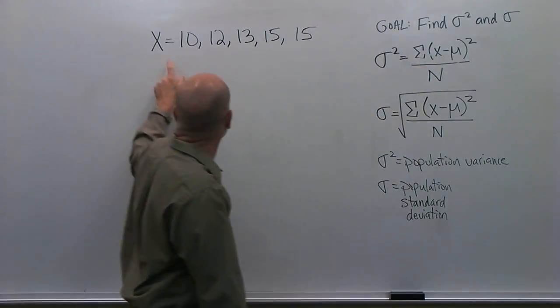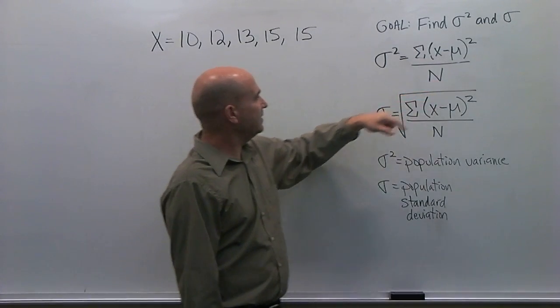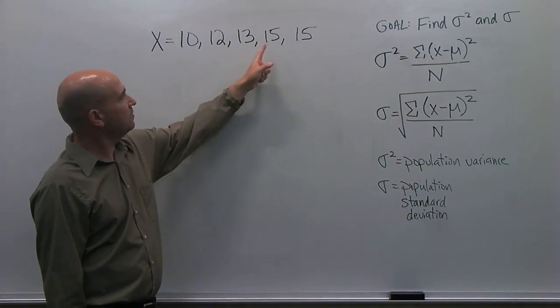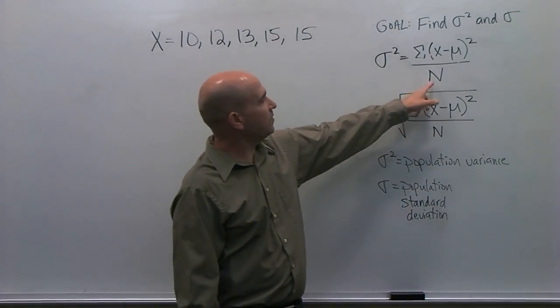Notice here we have an x, and that's our variable x here. We also have an n, and that's equal to the number of values we have here, which is 5.